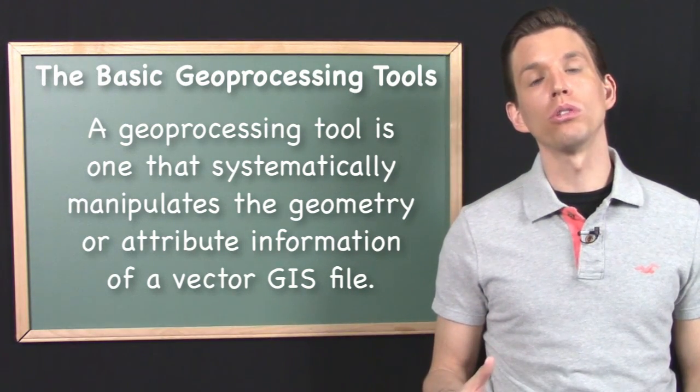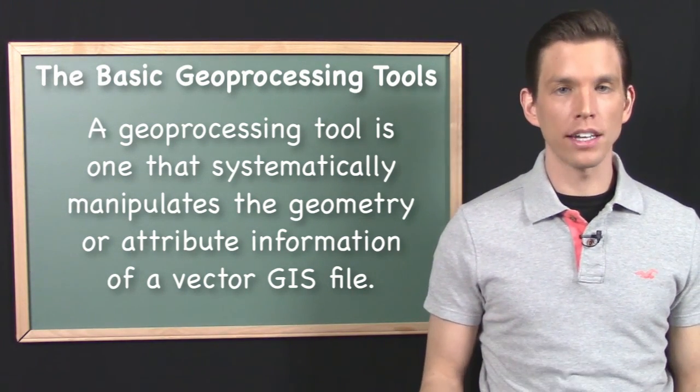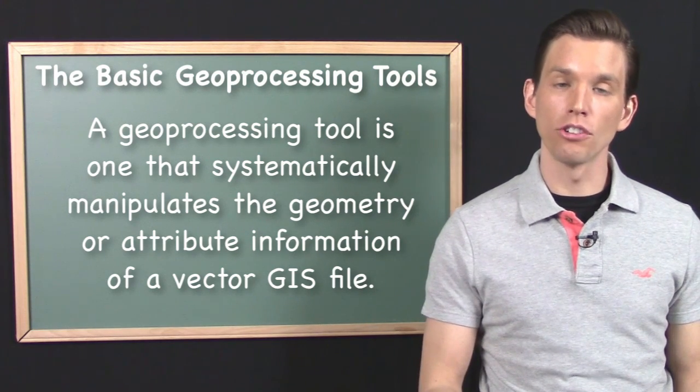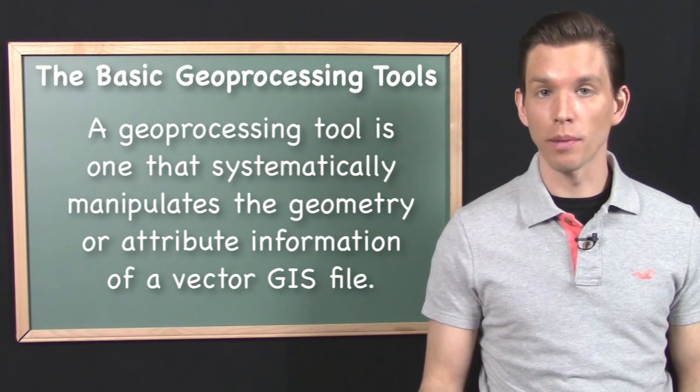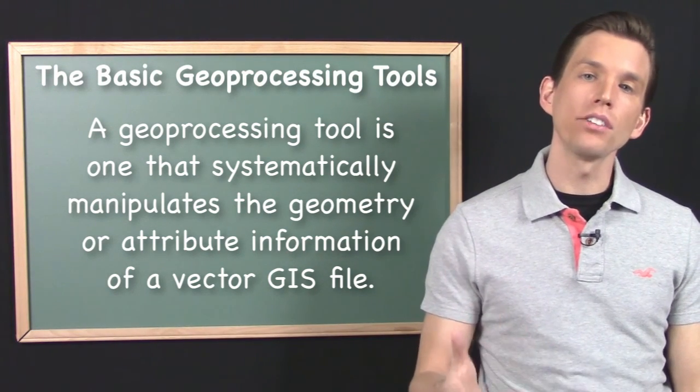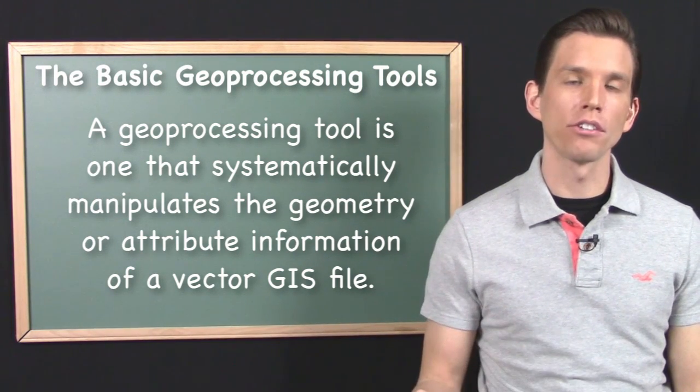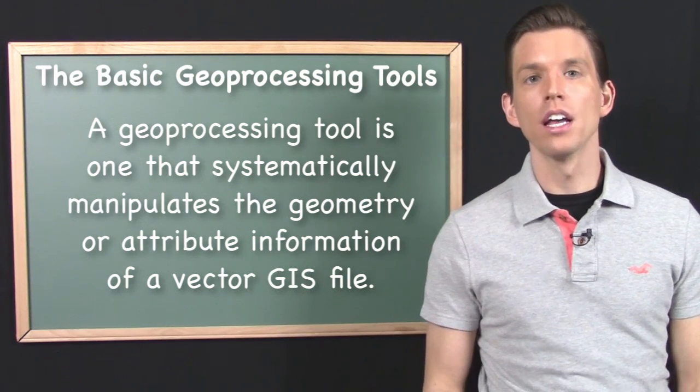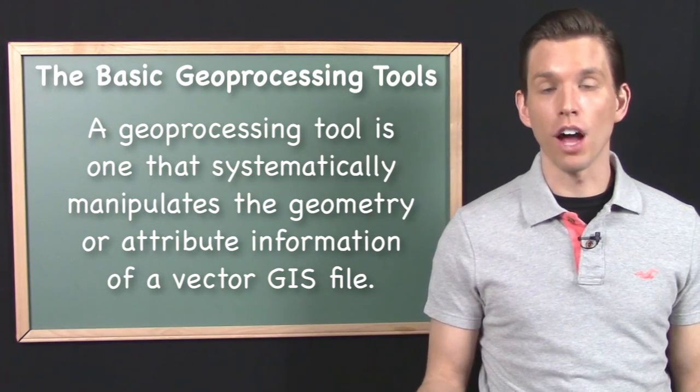Let me say that again. A geoprocessing tool is one that systematically manipulates either the geometry or the attribute information or both of a Vector GIS data file. And it is often the case that when people think about geoprocessing, the first thing that comes to mind is the manipulation of the geometry.